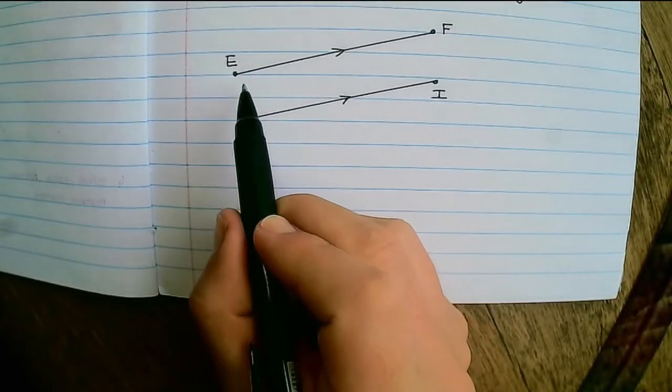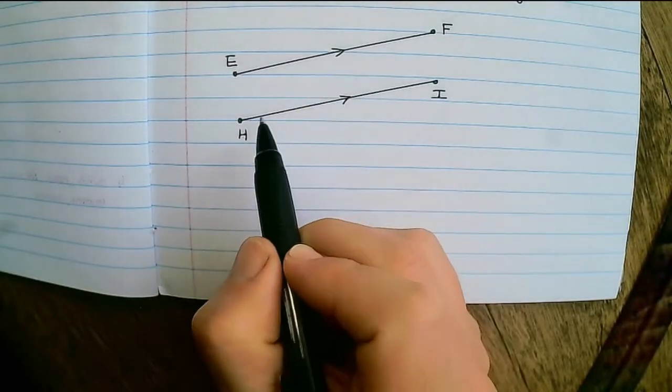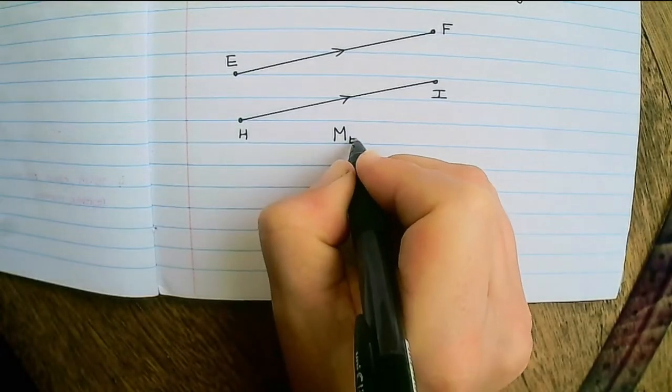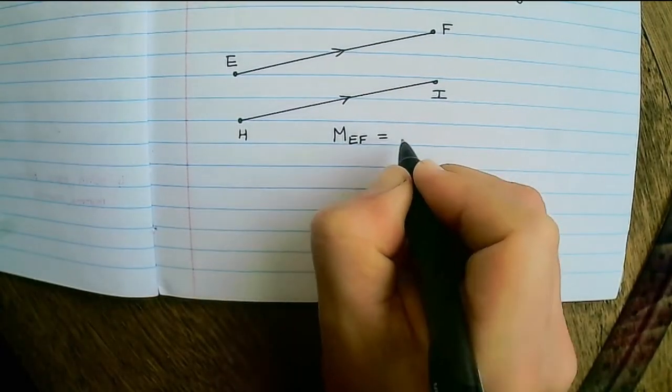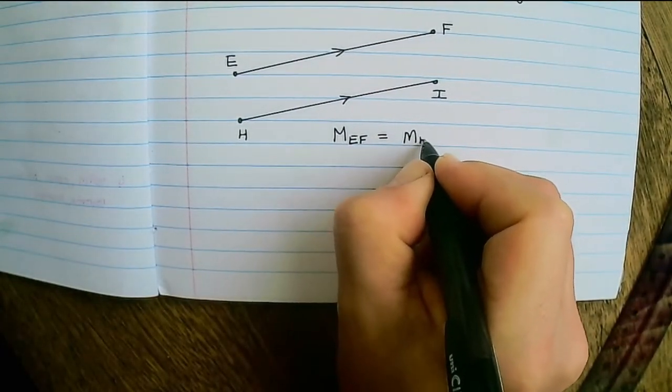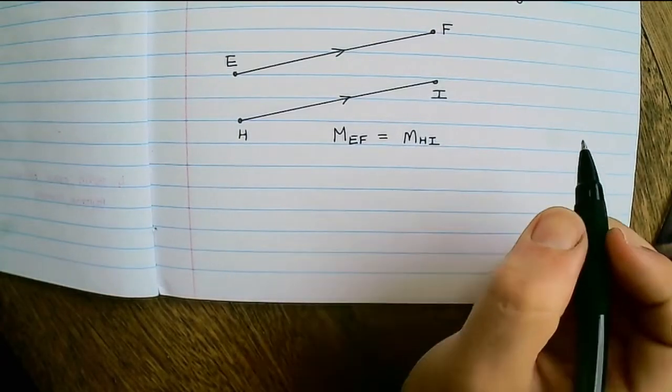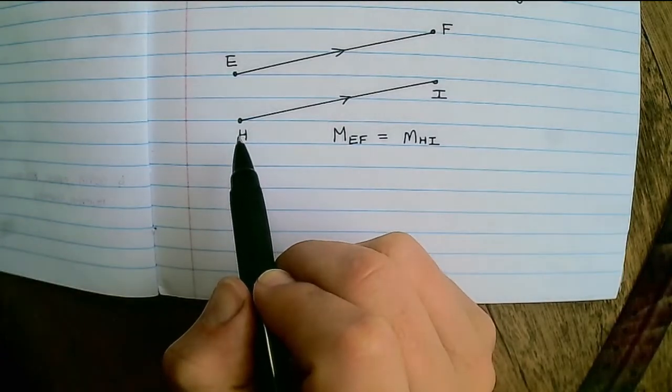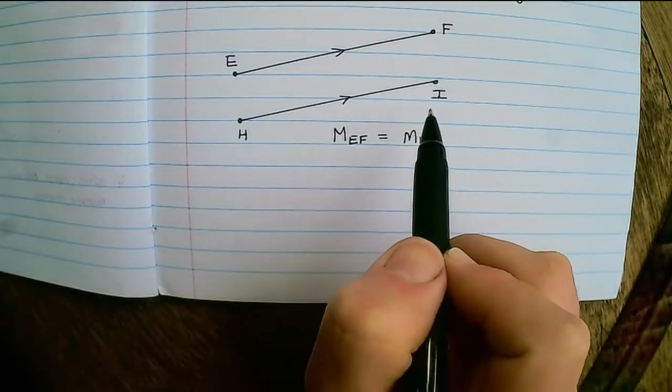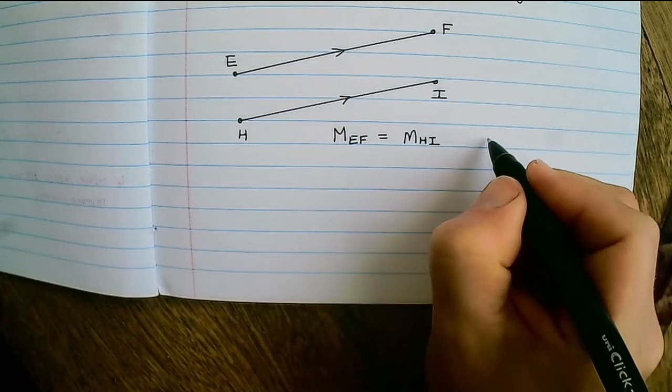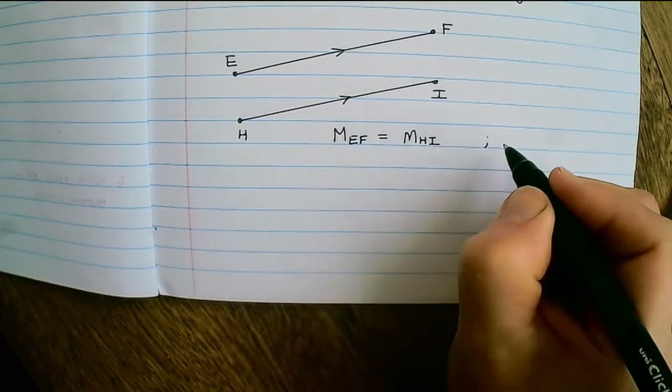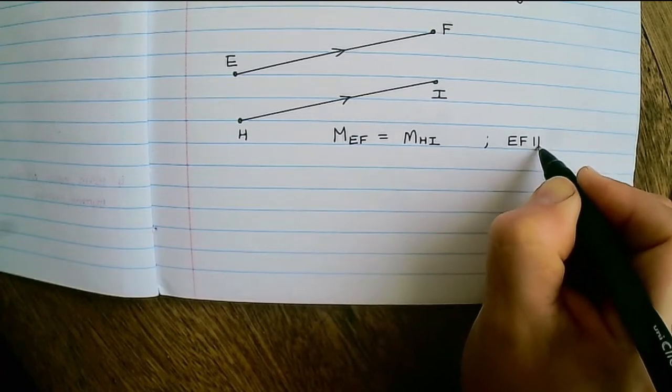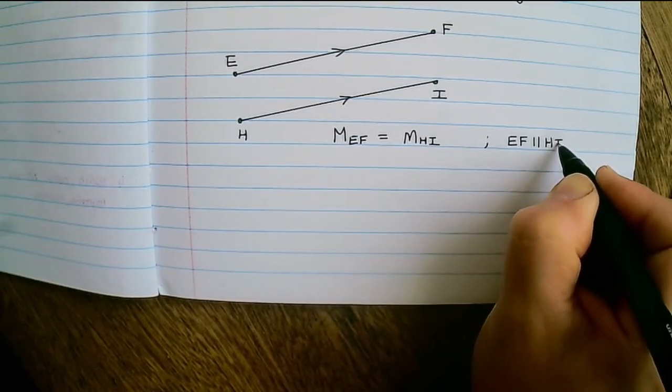Now if we have two lines that are running parallel to each other, then we can say that their gradients would be equal. So the gradient of line EF would be equal to the gradient of line HI, and when we prove gradients are equal we can conclude that EF is parallel to line HI.